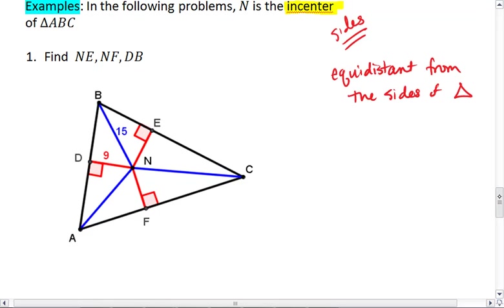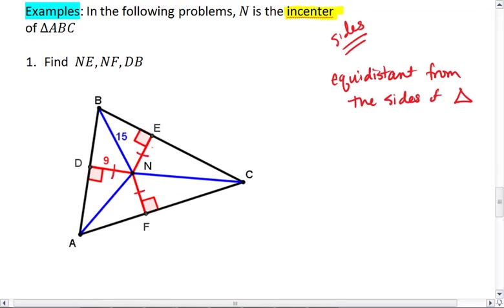So in our example below, this means that all of the red segments are equal. And since DN is 9, then NE and NF are also 9.